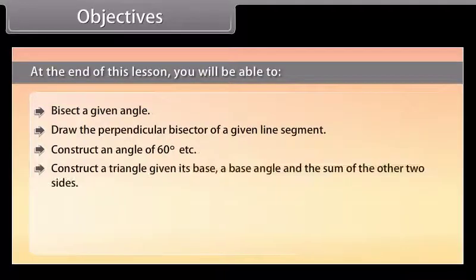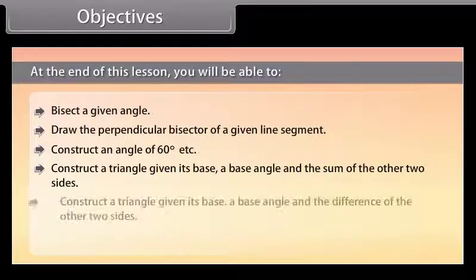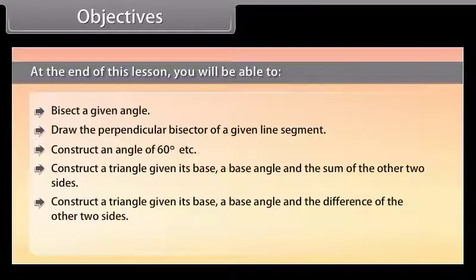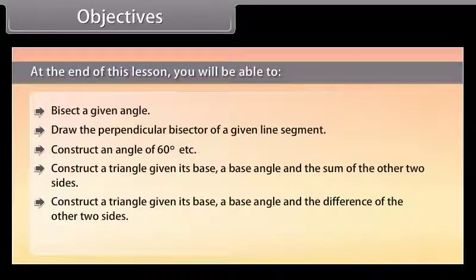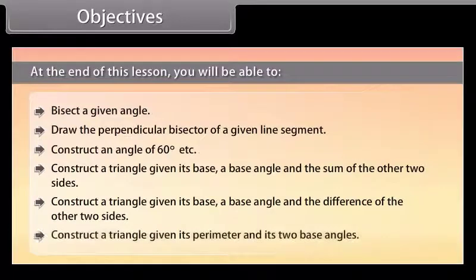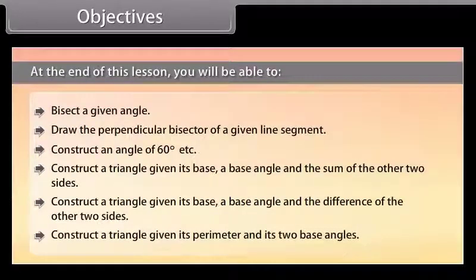Construct a triangle given its base, a base angle, and the sum of the two other sides. Construct a triangle given its base, a base angle, and the difference of the other two sides. And construct a triangle given its perimeter and its two base angles.